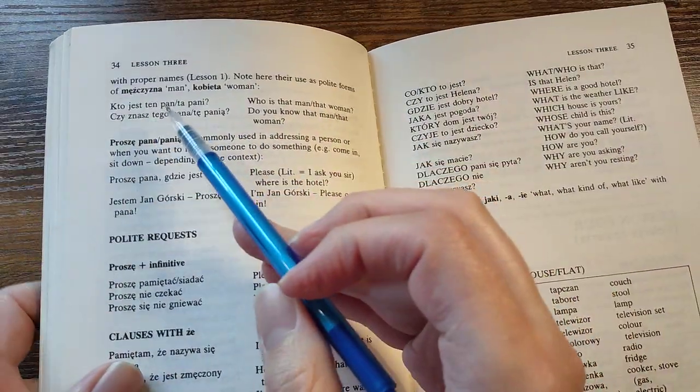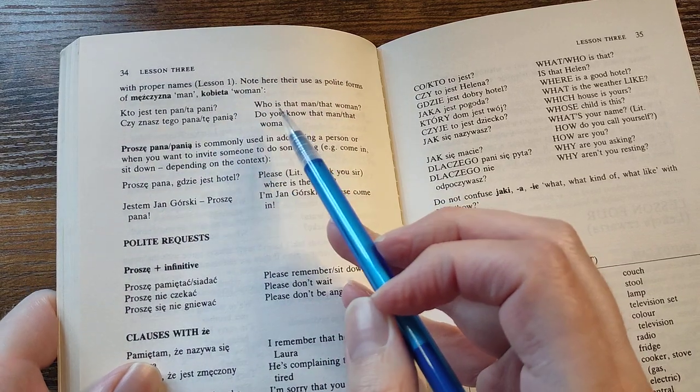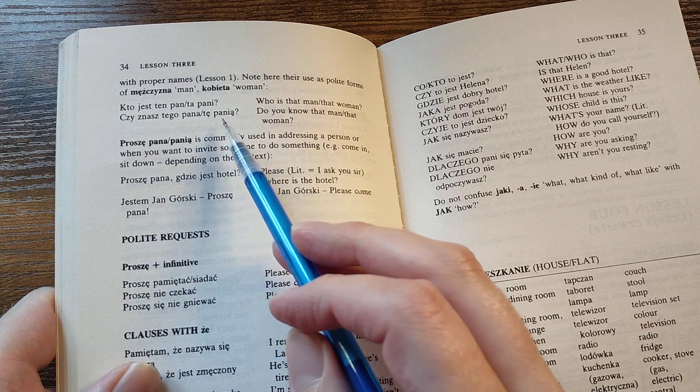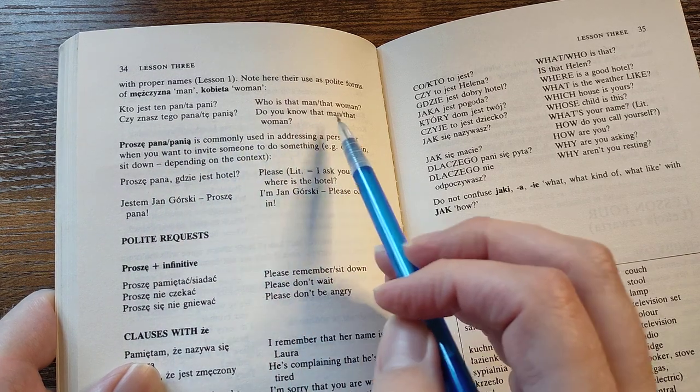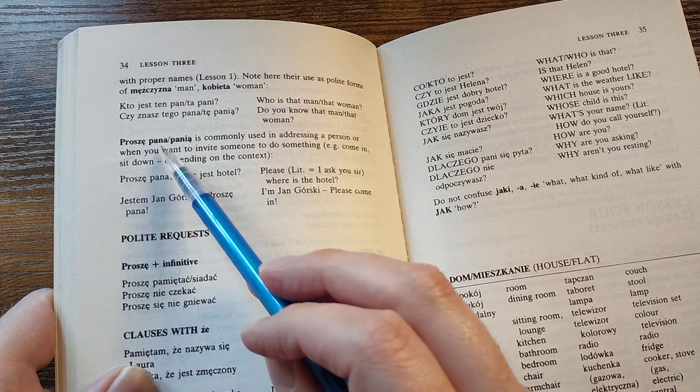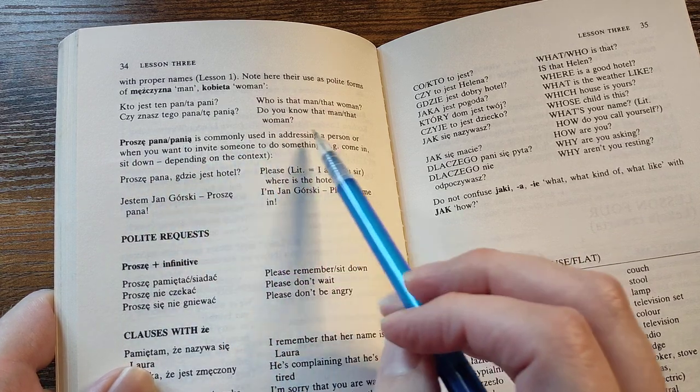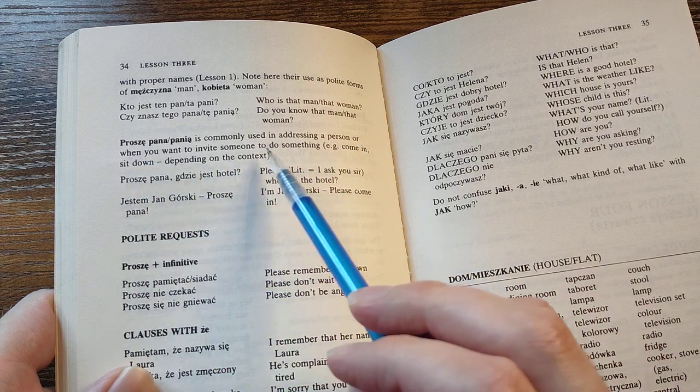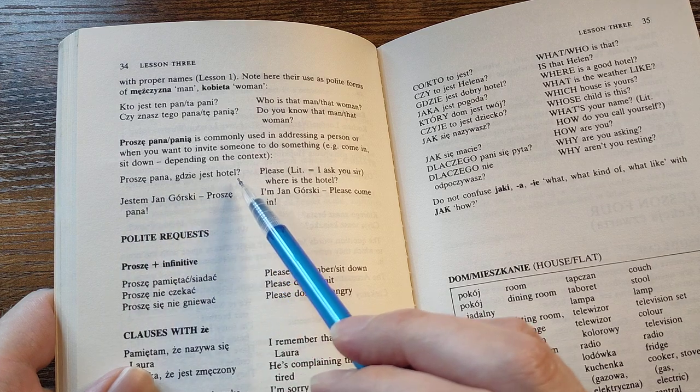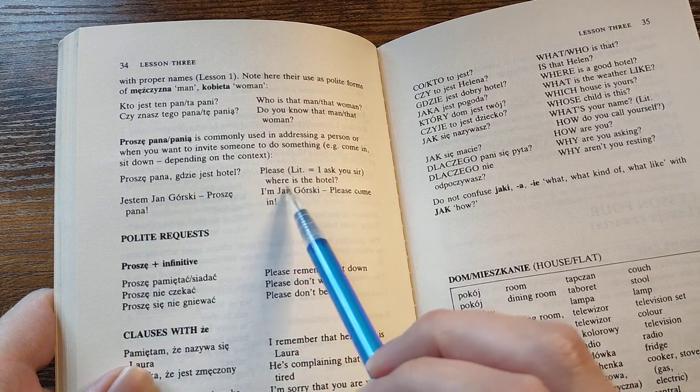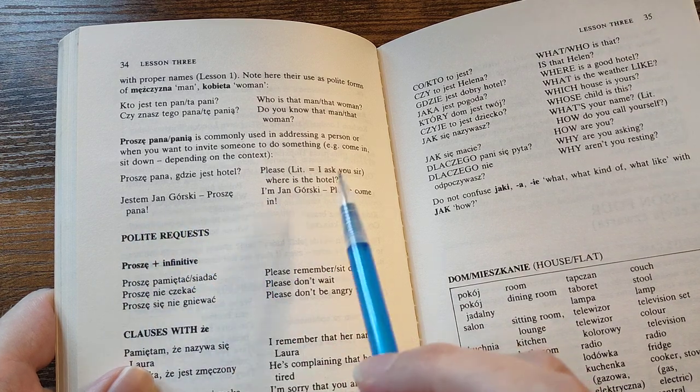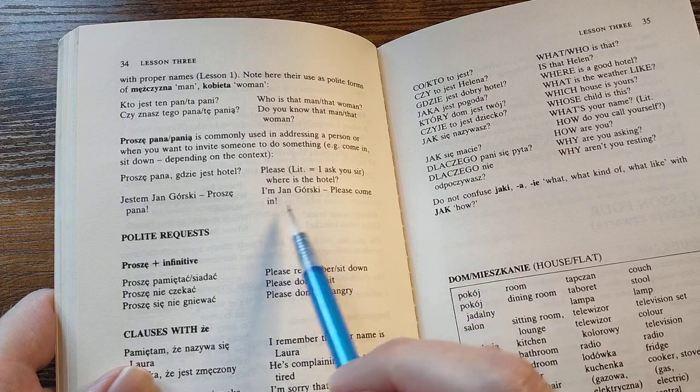They're asking about the way. Who is that man, that woman? Do you know that man, that woman? Proszę pana. Pania is commonly used in addressing a person or when you want to invite someone to do something. Proszę pana, gdzie jest hotel? Please, where is the hotel? Jestem Jan Górski. Proszę pana. I'm Jan Górski. Please come in.